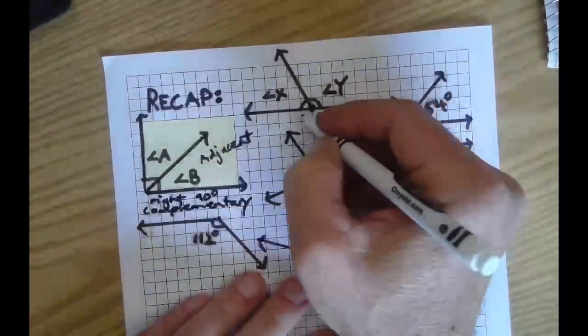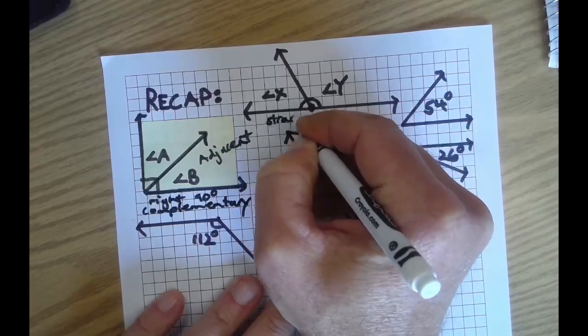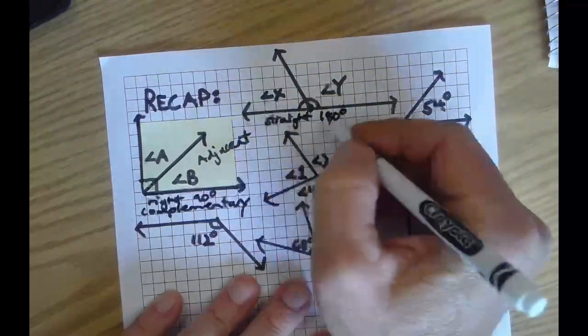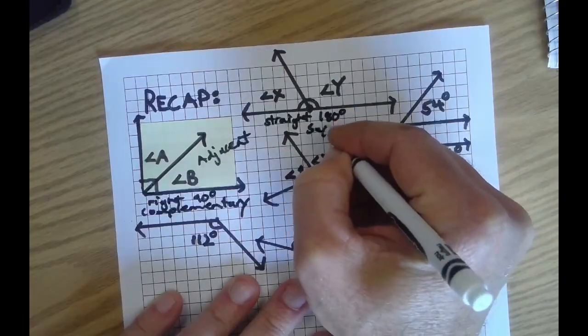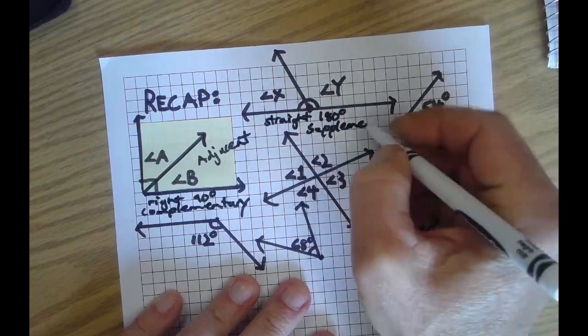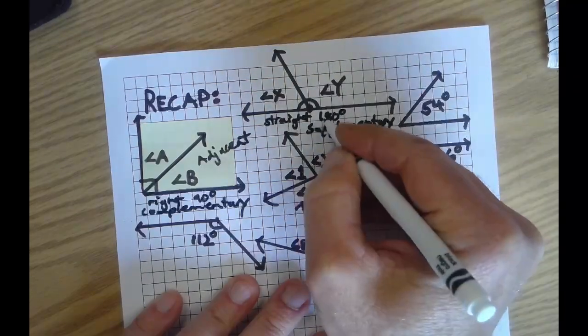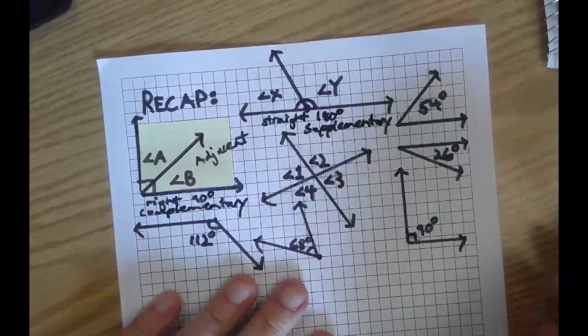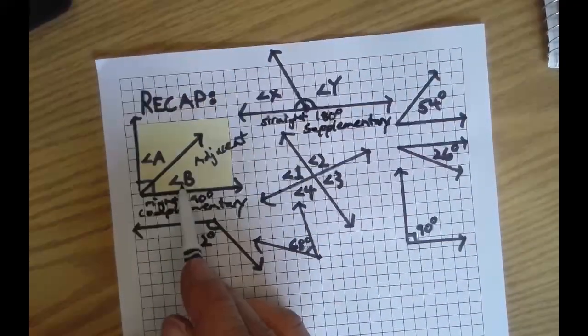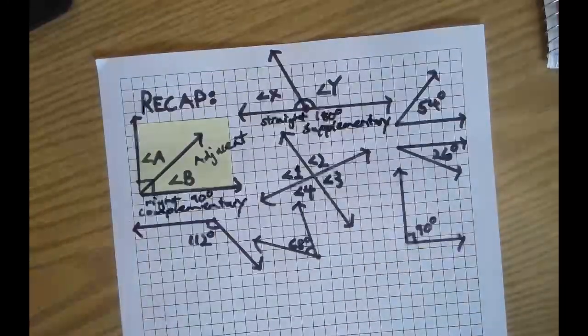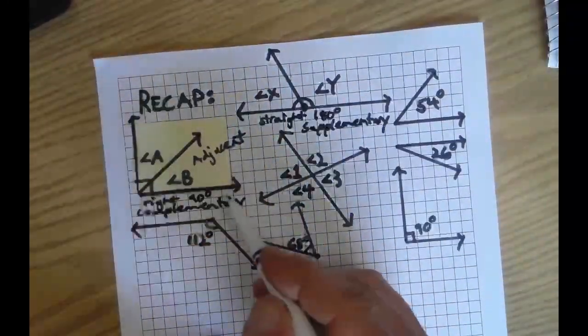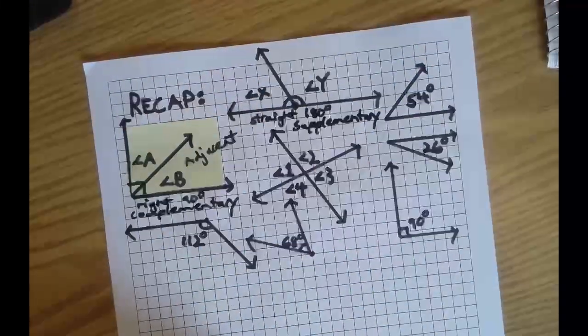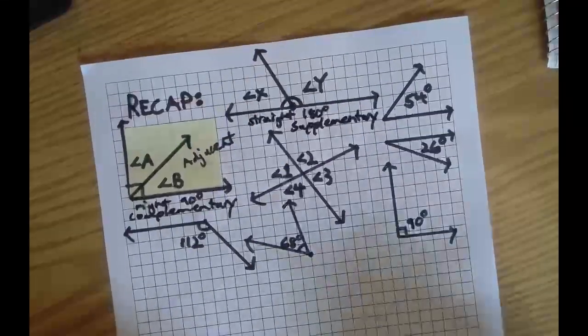These two up here, that's a straight angle, which means it's 180. And so just like complementary, we call this supplementary, in that we've got two or more angles that have a sum of 180. So in this case, angle x plus angle y equals 180. Over here, angle a plus angle b equals 90. So just that basic knowledge of what's a right angle, what's a straight angle, and knowing that we can write and solve equations that equal 90 and 180, respectively.